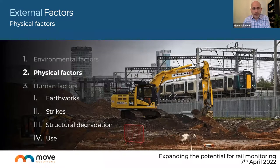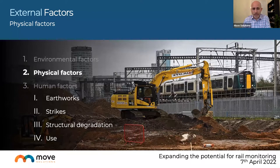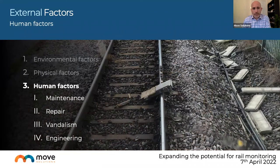Physical factors include localized earthworks on top of, underneath, or nearby the rail structures; rail strikes affecting infrastructure or associated structures; and the general degradation of the structure over time — the sleepers, the tracks themselves — as heavy vehicles use these structures on a daily basis, causing wear and tear on structural integrity.